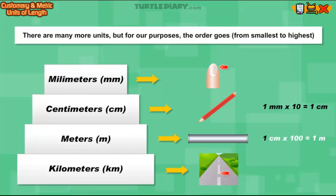One centimeter times 100 equals 1 meter. One meter times 1000 equals 1 kilometer.